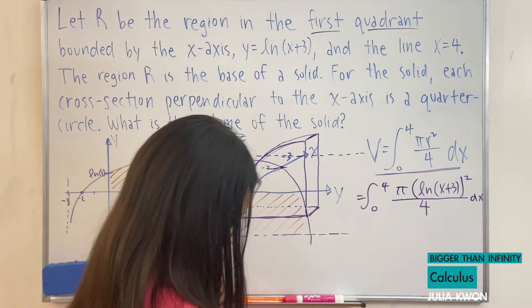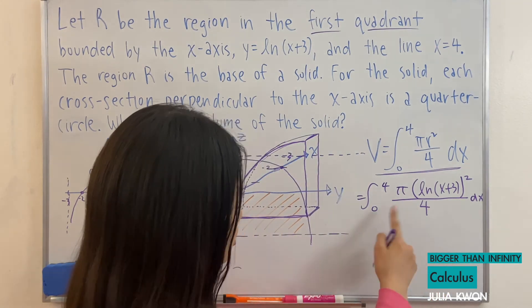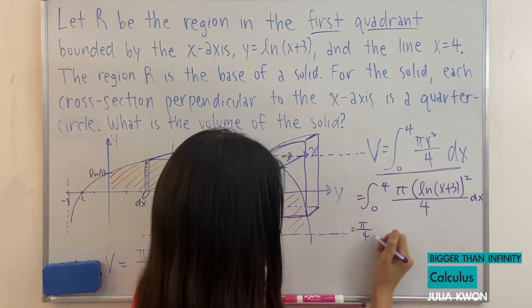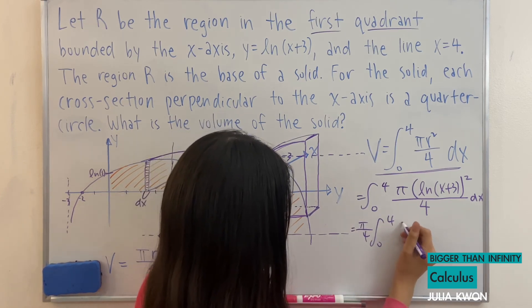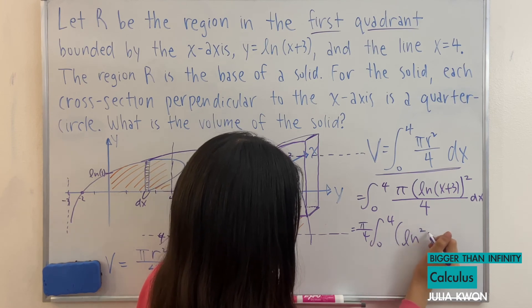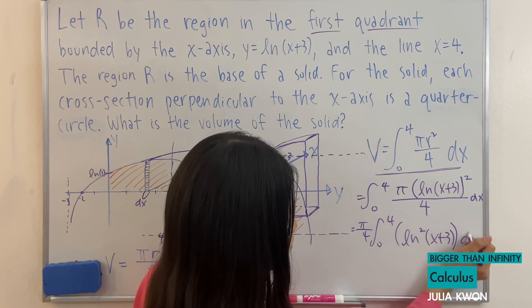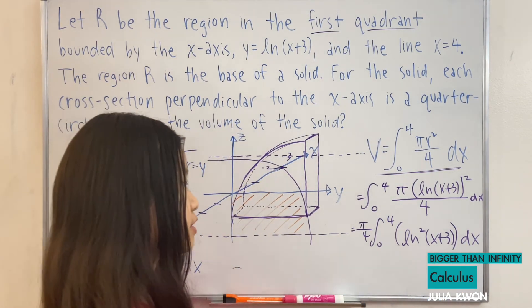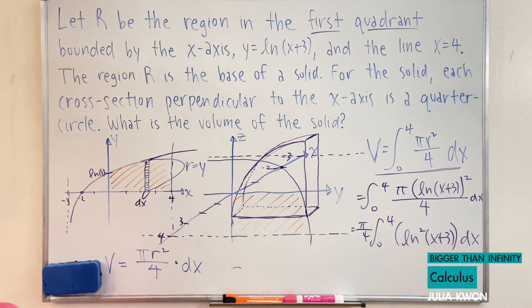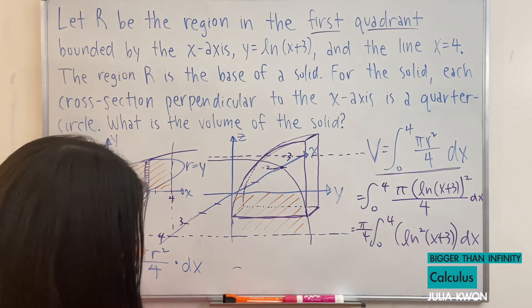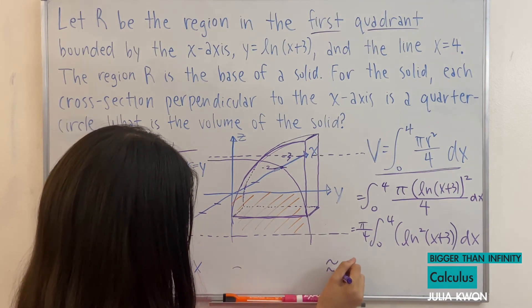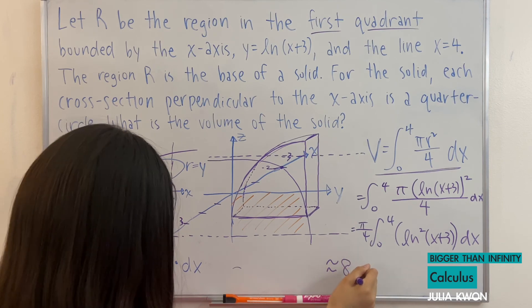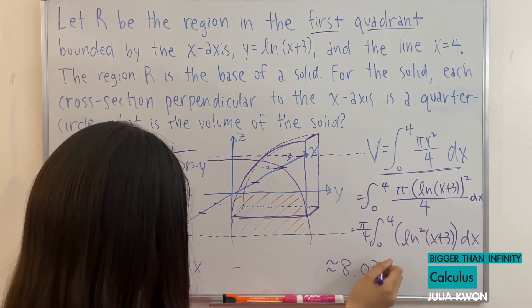And then, oh sorry. We can take this integral by using integration by parts twice. Although π/4 can go in the front since they are just constants. Like I was saying, we can integrate this by hand by using by parts twice. But since that's going to take a long time, I'll just write the answer for you approximately. The answer to this integral would be 8.0378.